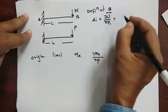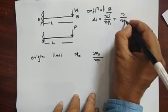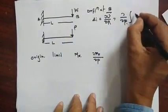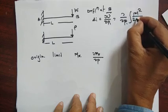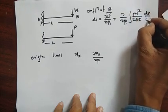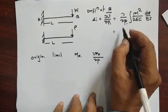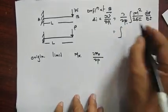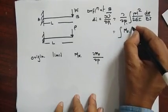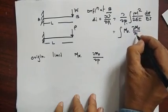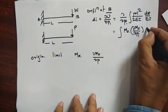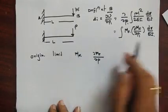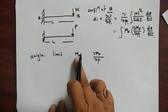The deflection δᵢ equals ∂U/∂P. The strain energy U is based on bending, where the strain energy is the integration of M² dx divided by 2EI. Taking the partial derivative, the deflection becomes the integration of Mx times (∂Mx/∂P) dx divided by EI. Our aim is to find Mx and the partial derivative of the bending moment with respect to P.